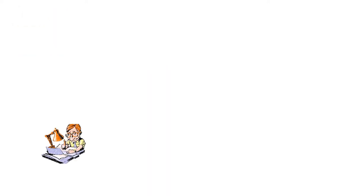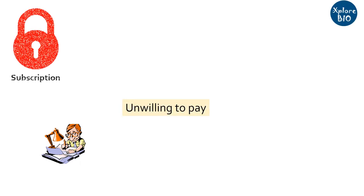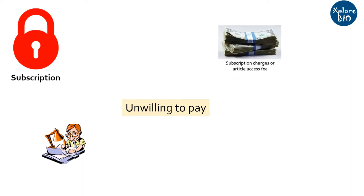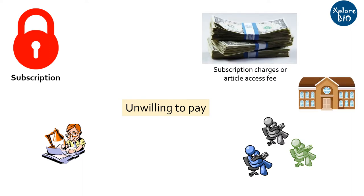On the other hand, if authors have limited research funds or are unwilling to spend money on publishing, they may choose subscription-based journals. Subscription journals do not charge money from authors; rather, these journals charge readers or institutions for providing access to read and download papers. The major drawback is that certain readers or institutions may not have a subscription or may be unwilling to pay the subscription fee, which might affect the number of readers and thus the citations.